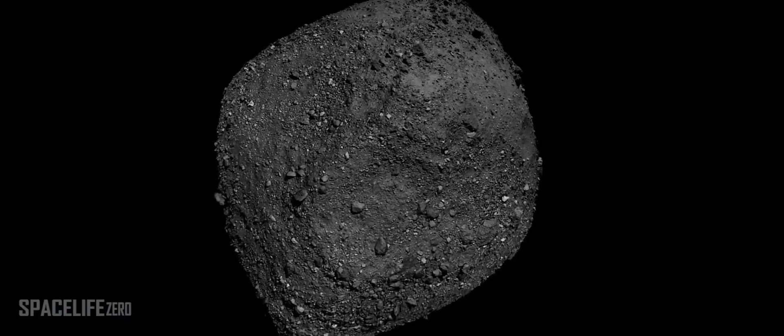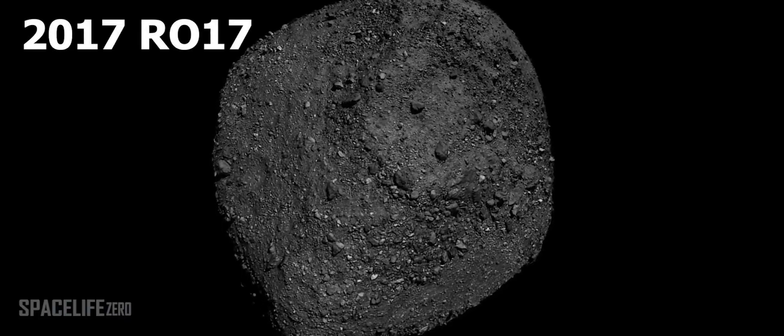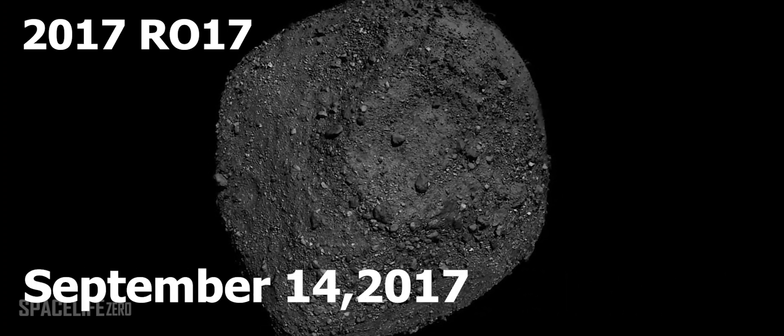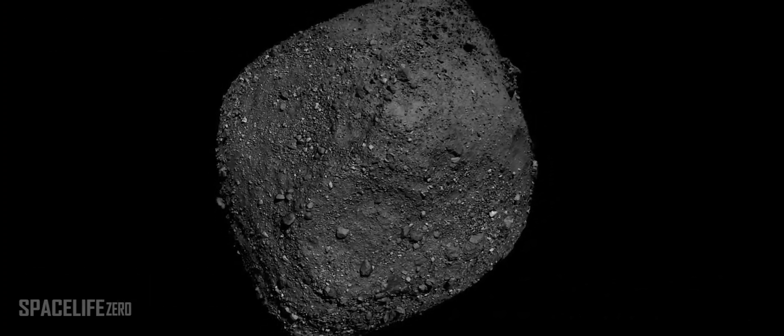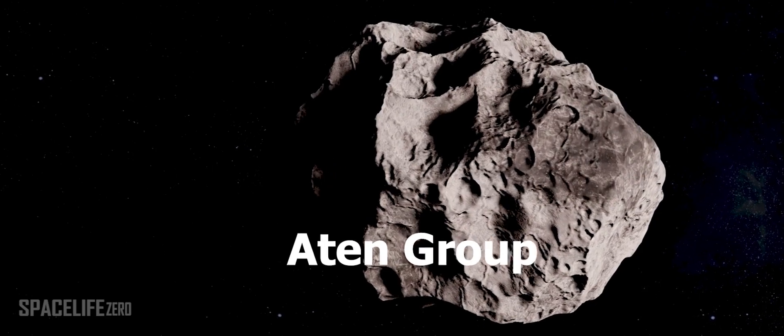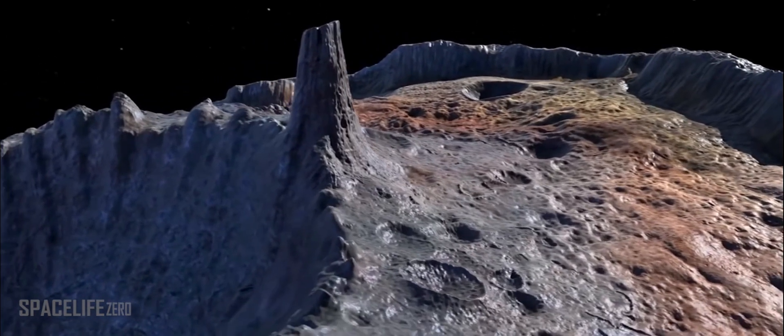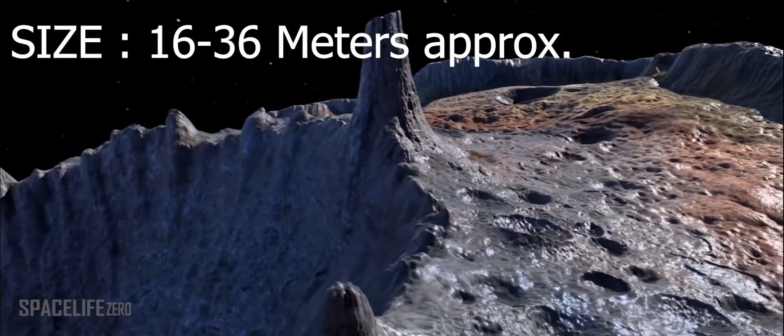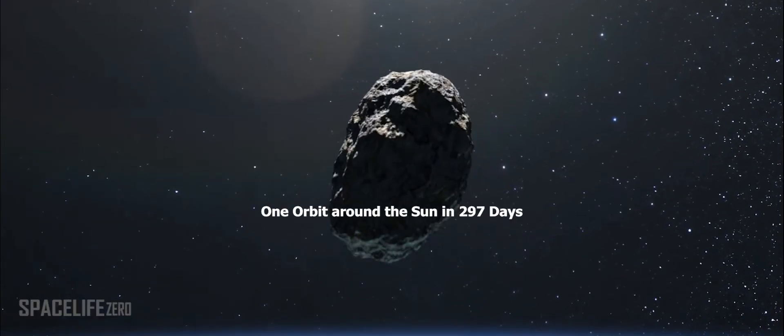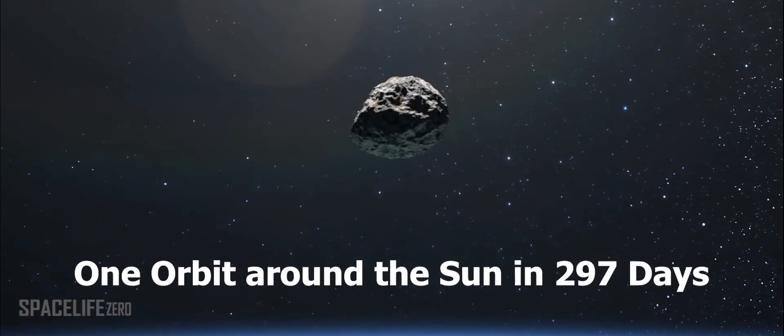The second asteroid, Asteroid 2017 R-017, was discovered on September 14, 2017, and it belongs to the Aten Group. Its size is estimated in the range from 16 meters to 36 meters, and it makes one orbit around the Sun in 297 days.